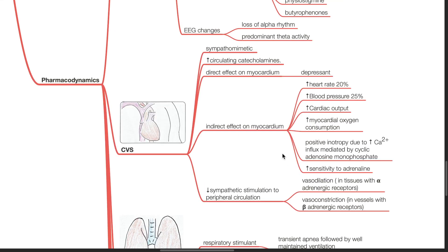Cardiovascular system. Ketamine is a sympathomimetic. It increases circulating catecholamines. Ketamine has a direct myocardial depressant effect. Indirect effect on the myocardium from ketamine causes increase in heart rate by 20%, increase in blood pressure by 25%, increased cardiac output.